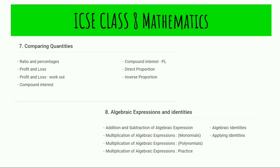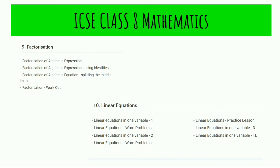Next is Comparing Quantities, covering ratio and percentages, profit and loss, compound interest, direct proportion, and inverse proportion. Then we have Algebraic Expressions and Identities — a very interesting and important chapter — covering addition and subtraction, multiplication of monomials, polynomial multiplication, and applying algebraic identities. For identities, we will do lots of practice and I promise no problem will be difficult afterwards.